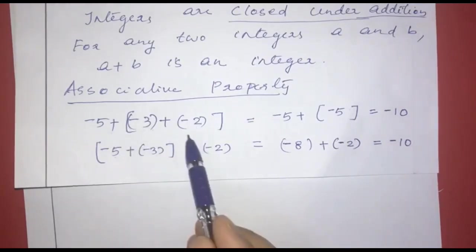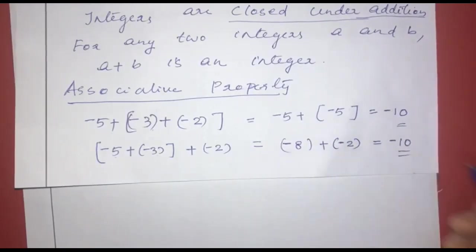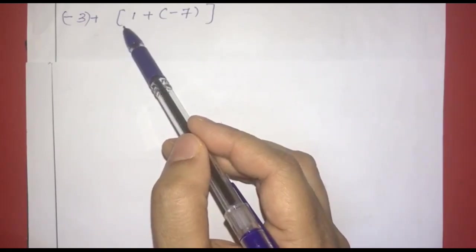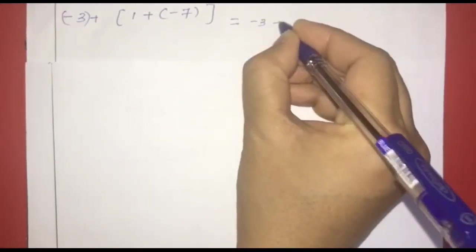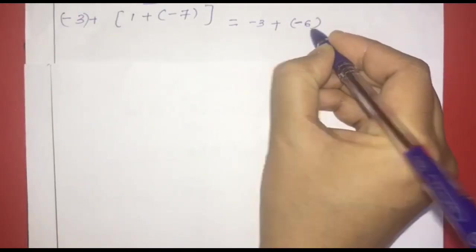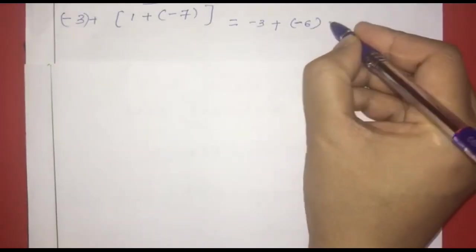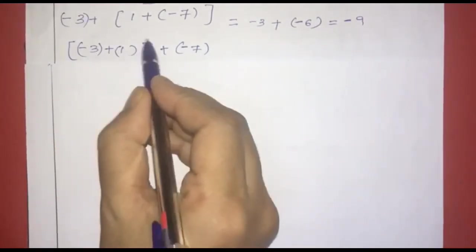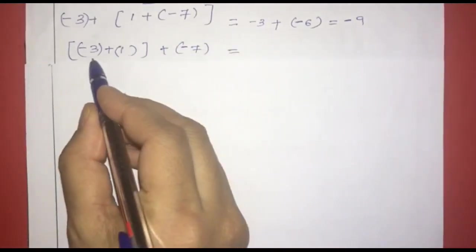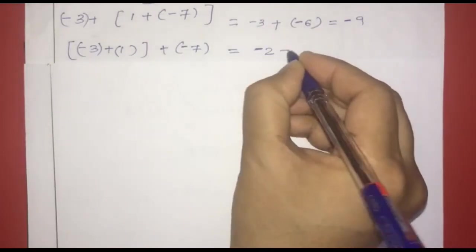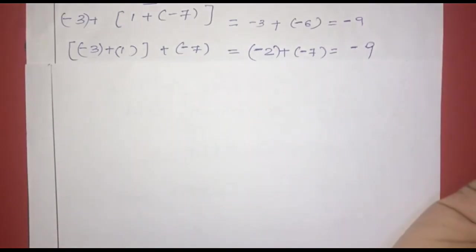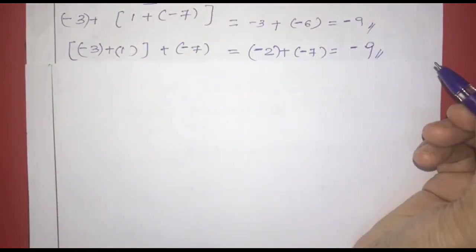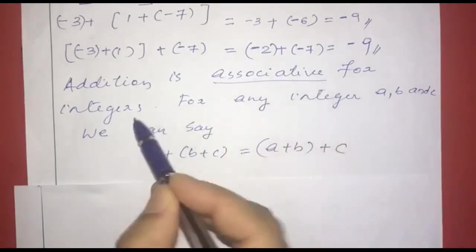Another example: negative 3 plus 1 plus negative 7. Grouping the last two: 1 plus negative 7 equals negative 6. Then negative 3 plus negative 6 equals negative 9. Grouping the first two: negative 3 plus 1 equals negative 2. Then negative 2 plus negative 7 equals negative 9. Same answer. Addition is associative for integers.